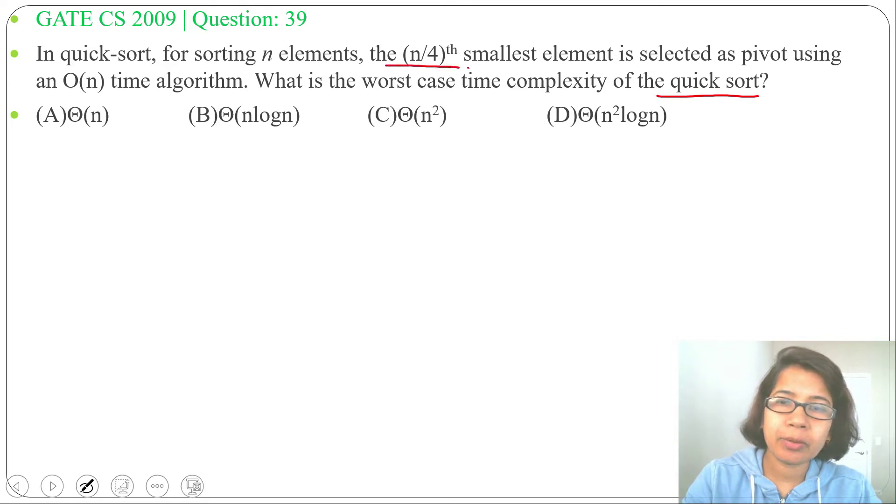We choose the (n/4)th smallest element as pivot. Suppose there are 8 elements, then 8÷4 = 2, meaning the second smallest element will be chosen as pivot. We'll do partitioning by choosing this second smallest element.